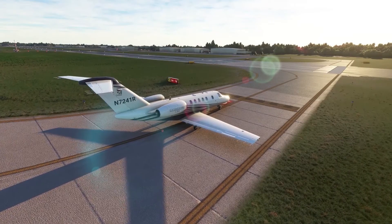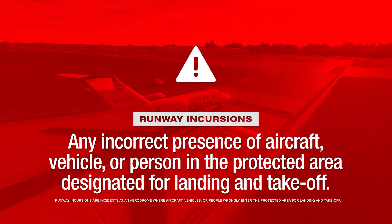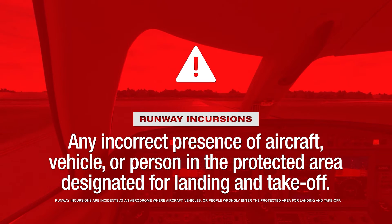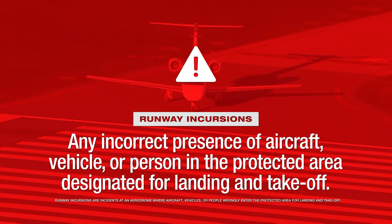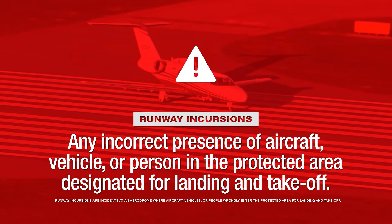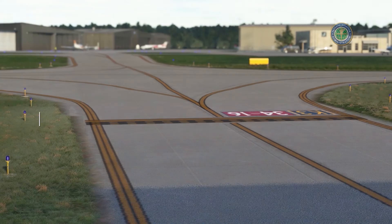Pilots, drivers, or pedestrians who enter portions of the protected area without authorization have committed a runway incursion, or RI, even if no other traffic is present. Runway incursions are any occurrence at an aerodrome involving the incorrect presence of an aircraft, vehicle, or person on the protected area of a surface designated for the landing and takeoff of aircraft.